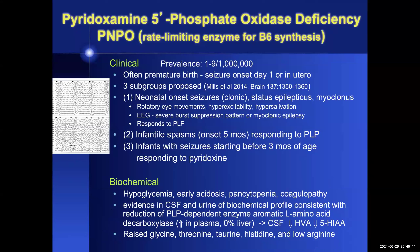PNPO-deficient children may have premature birth and seizure onset on day one or even in utero. Three subgroups are proposed: first, neonatal-onset seizures which may be clonic, myoclonic, or status epilepticus, distinguished by rotatory eye movements, hyperexcitability, and hypersalivation, with EEGs showing burst suppression or myoclonic epilepsy — these respond to PLP. Second, infantile spasms responding to PLP. Third, infants with seizures starting before three months of age, which respond to pyridoxine. Biochemical markers include hypoglycemia, early acidosis, pancytopenia, and coagulopathy. CSF and urine profile shows reduction in PLP-dependent enzymes including AADC, resulting in decreased CSF HVA and 5-HIAA, and raised glycine, threonine, taurine, and histidine with low arginine.